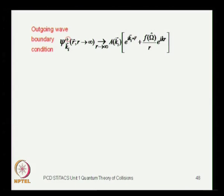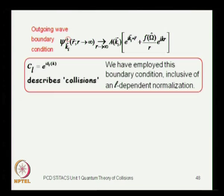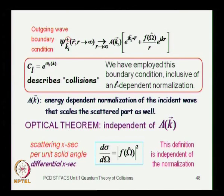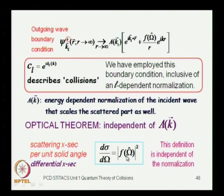What we made use of are the outgoing wave boundary conditions — the collision boundary conditions — as opposed to the incoming wave photo-ionization boundary conditions. We concluded that the optical theorem is independent of the energy-dependent normalization. In the course of our derivation we also recognized that the differential cross section dσ/dΩ equals the square of the modulus of the scattering amplitude, and this definition is also independent of the normalization.